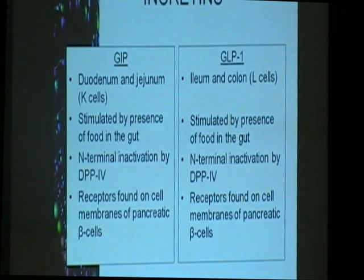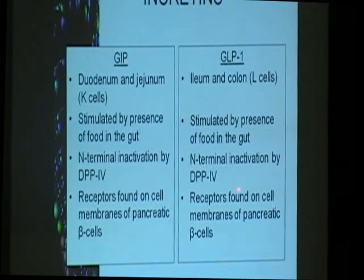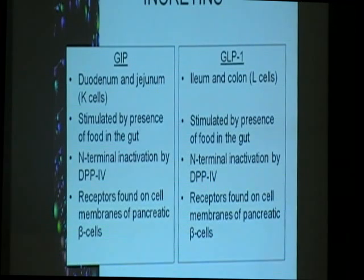To show where they're coming from — so it's easy to remember your GLP-1, we have the letter L there — it is coming from the L cells in the distal portion of the intestine and colon, and it's stimulated by the presence of food in the gastrointestinal tract. Its receptors are found on the surface of pancreatic beta cells, and it is inactivated by the DPP enzyme, which we will discuss shortly.